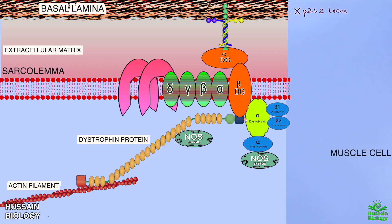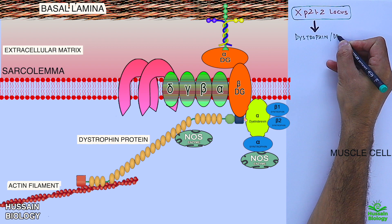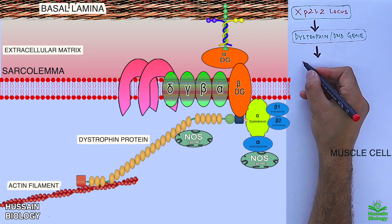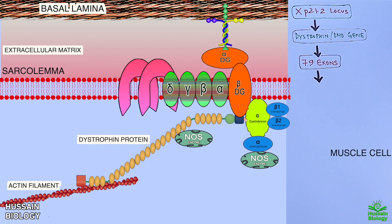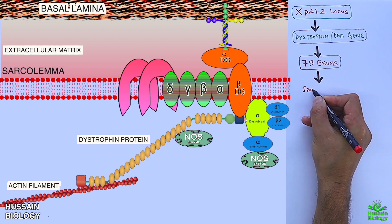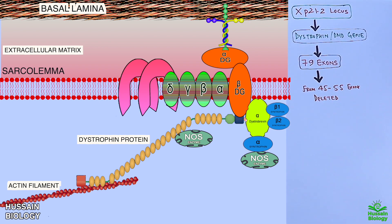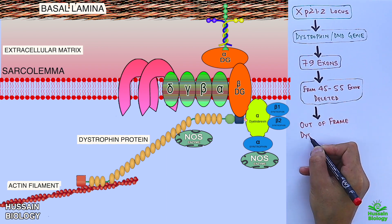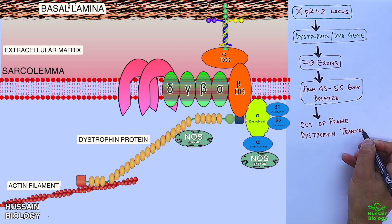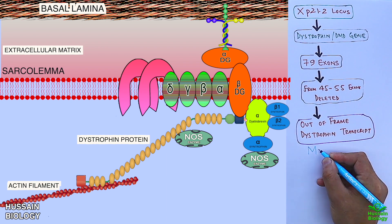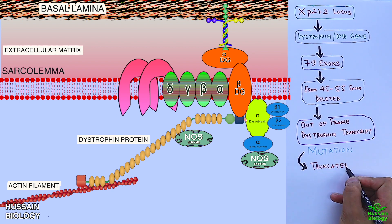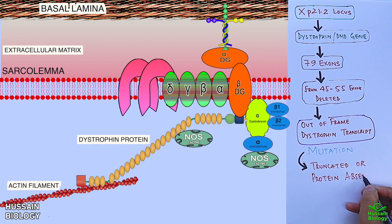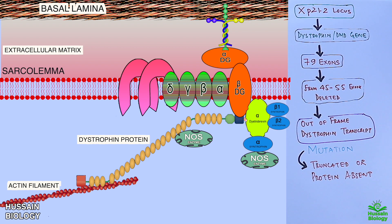The Xp21.2 locus has the dystrophin gene with 79 exons. When we get a mutation in the dystrophin gene, some exons are deleted — for example, exons 45 to 55 are deleted — which gives us an out-of-frame dystrophin transcript, and ultimately we get a truncated protein or even complete absence of the dystrophin protein.